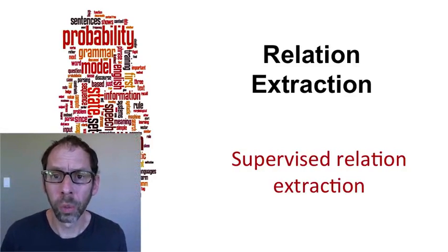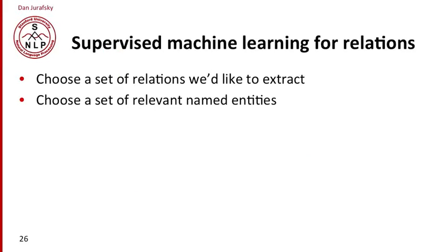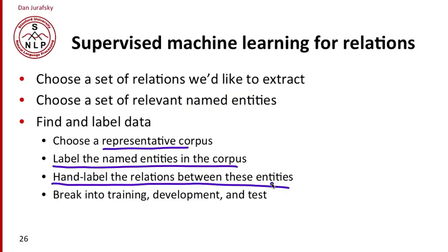Supervised machine learning is an important way to do relation extraction. The algorithm works as follows: we choose some set of relations we'd like to extract, and some set of entities we'd like to extract the relationship between — this presumes we have a named entity tagger that can tag those entities. We find some data and label it. We choose a representative corpus, run our named entity tagger and label the entities, or label them by hand if the corpus is small. Then by hand, we label the relationship between each entity — all the relations we're interested in, labeled throughout the corpus.